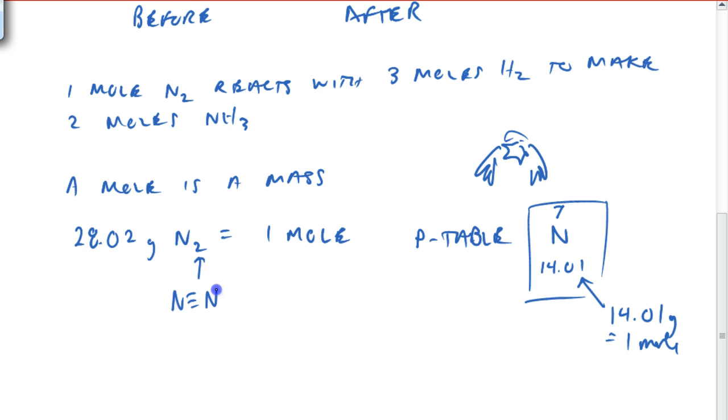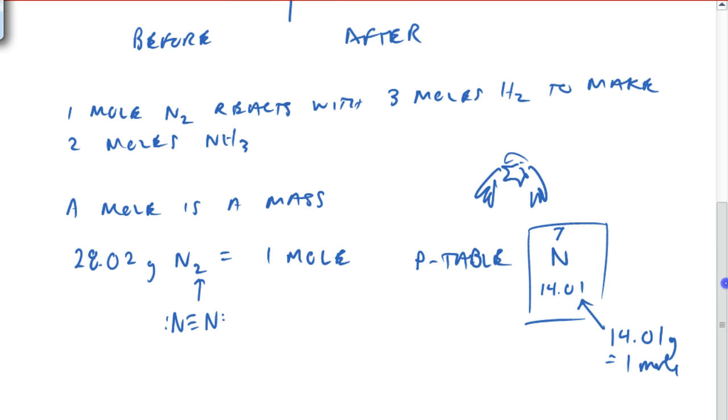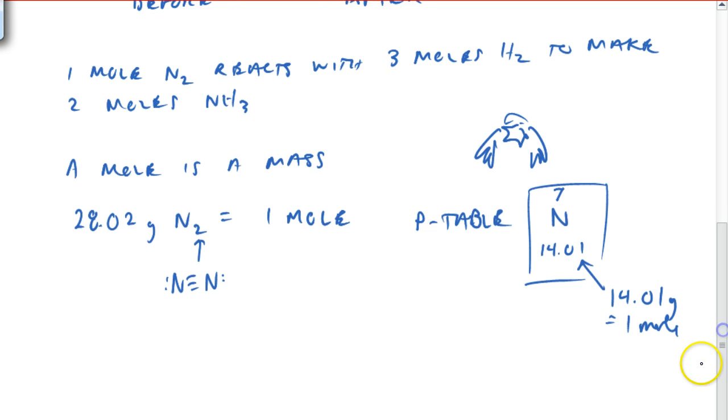So why does it say 28.02? Because there's two of them. Remember, this is a mole of nitrogen molecules, OK? So we are dealing with N2. Now, I know that a mole of nitrogen is 28.02, so let's take a look again at my equation here.